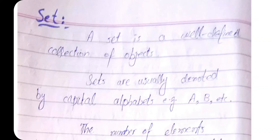Welcome back to the lecture. Today we are going to learn about sets. We will cover the definition of a set, representation of sets, subsets, proper and improper subsets, cardinality, and cardinality of Cartesian products. We will also represent sets on Venn diagrams for the operations of union, intersection, and difference.